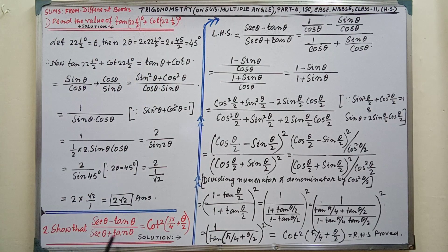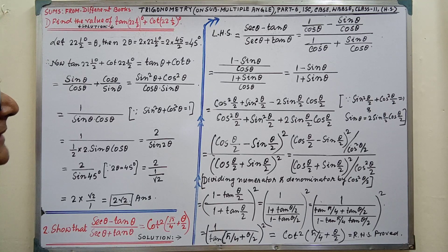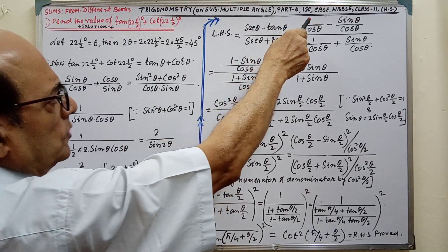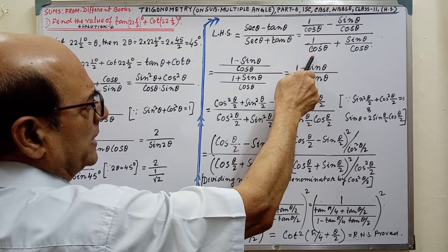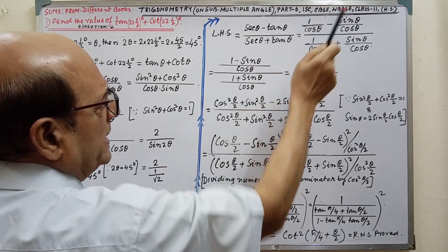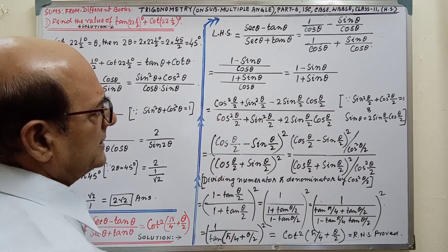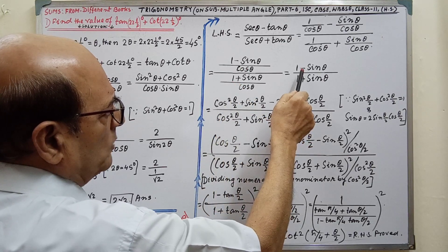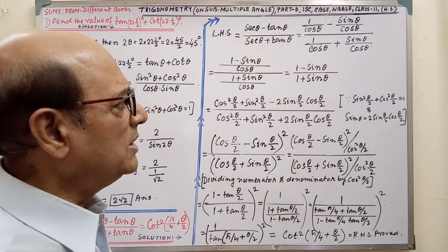Next sum — we need to prove left hand side equals right hand side. After writing the left hand side with sec theta and tan theta: sec theta we may write as 1 by cos theta, and tan theta we may write as sin theta by cos theta. Similarly, 1 by cos theta plus sin theta by cos theta. Taking the LCM as cos theta, we get 1 minus sin theta in the numerator. Similarly here, LCM cos theta gives 1 plus sin theta. The cos thetas cancel, giving us 1 minus sin theta by 1 plus sin theta.